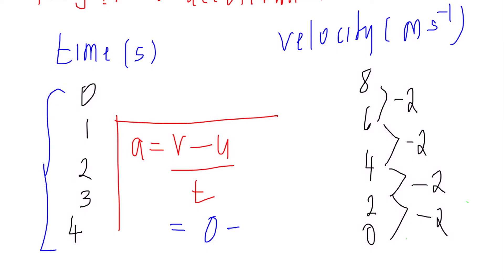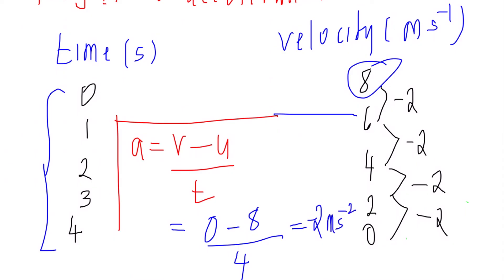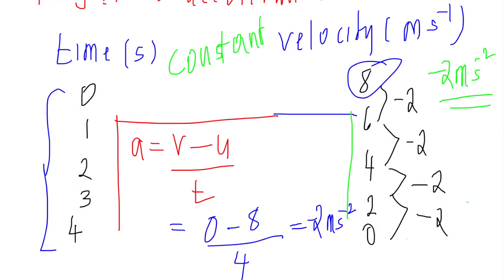Final velocity (V) equals zero. Initial velocity (U) equals 8. Negative 8 divided by 4 equals negative 2. The acceleration is negative 2 meters per second squared.